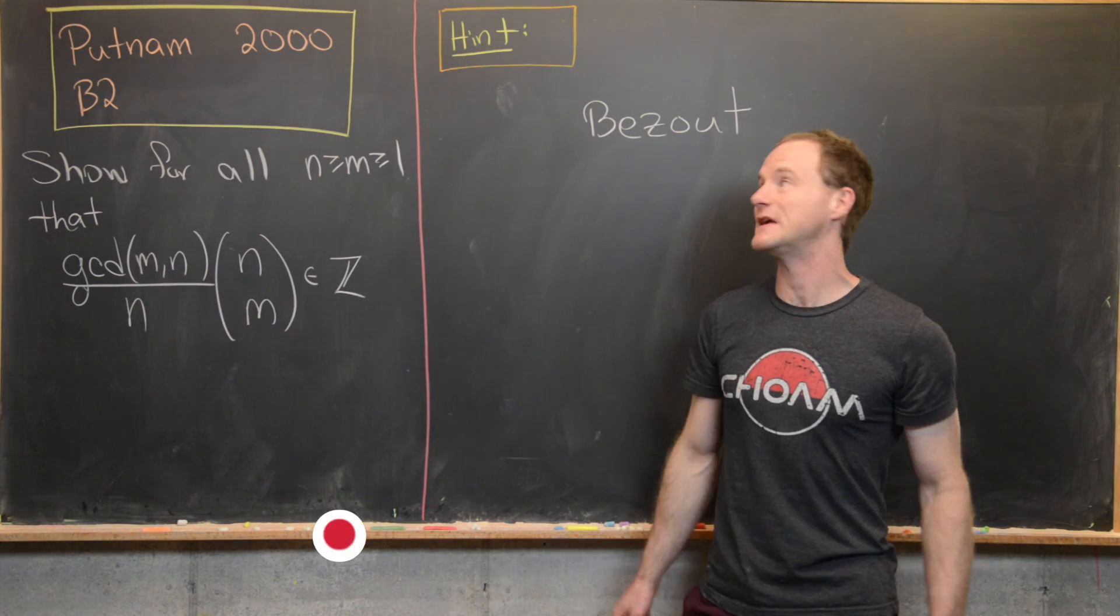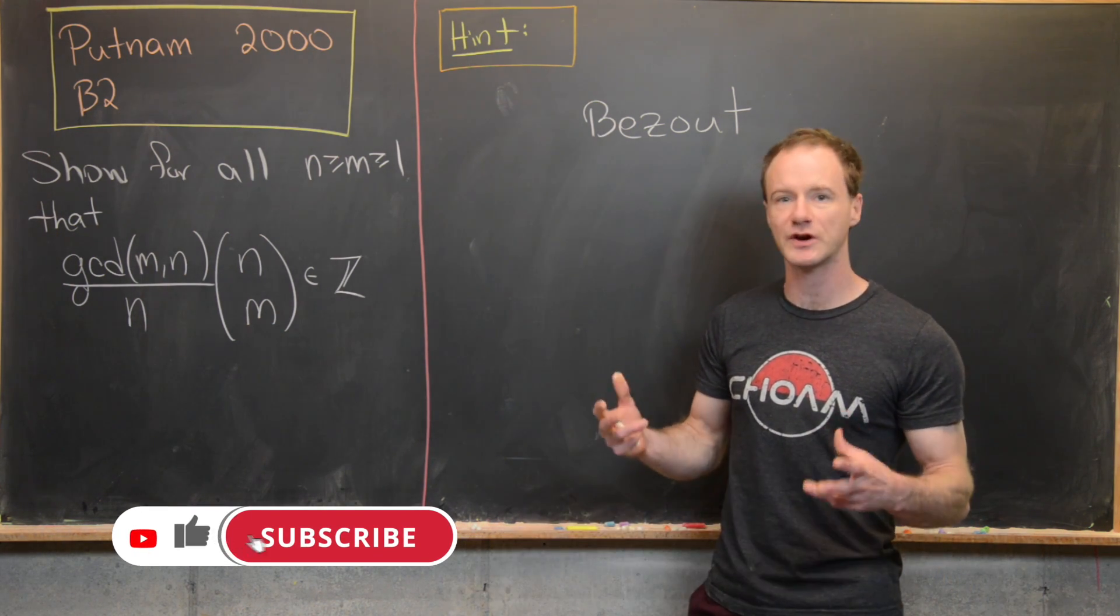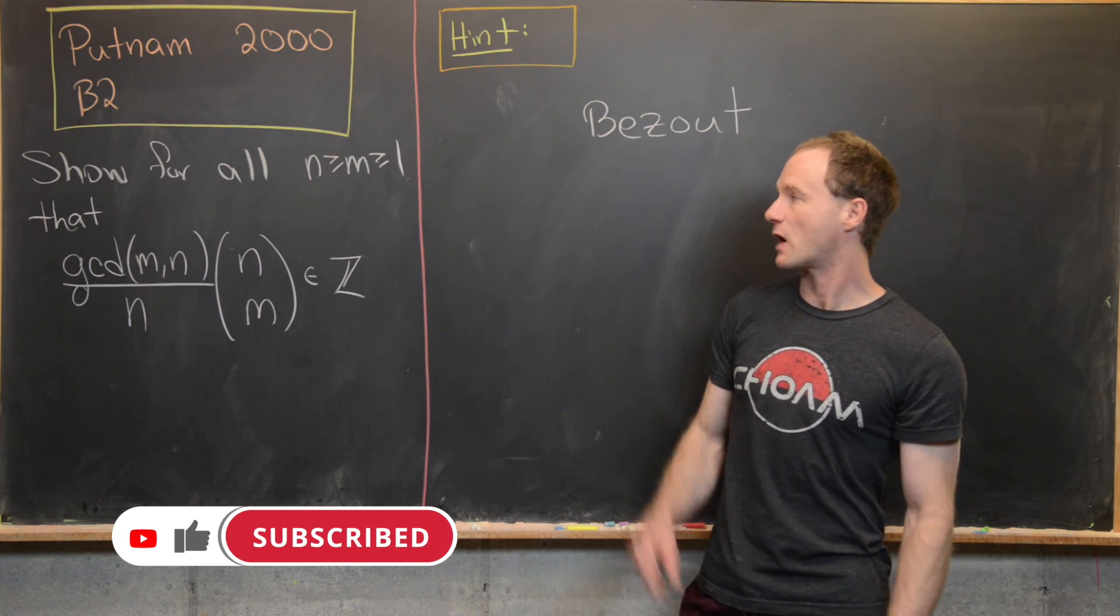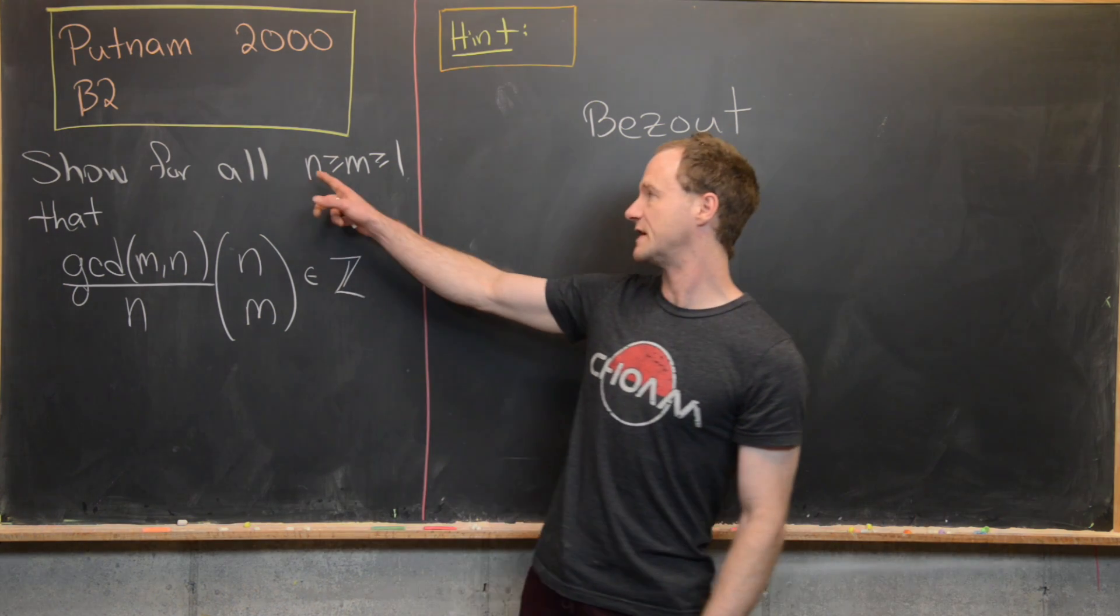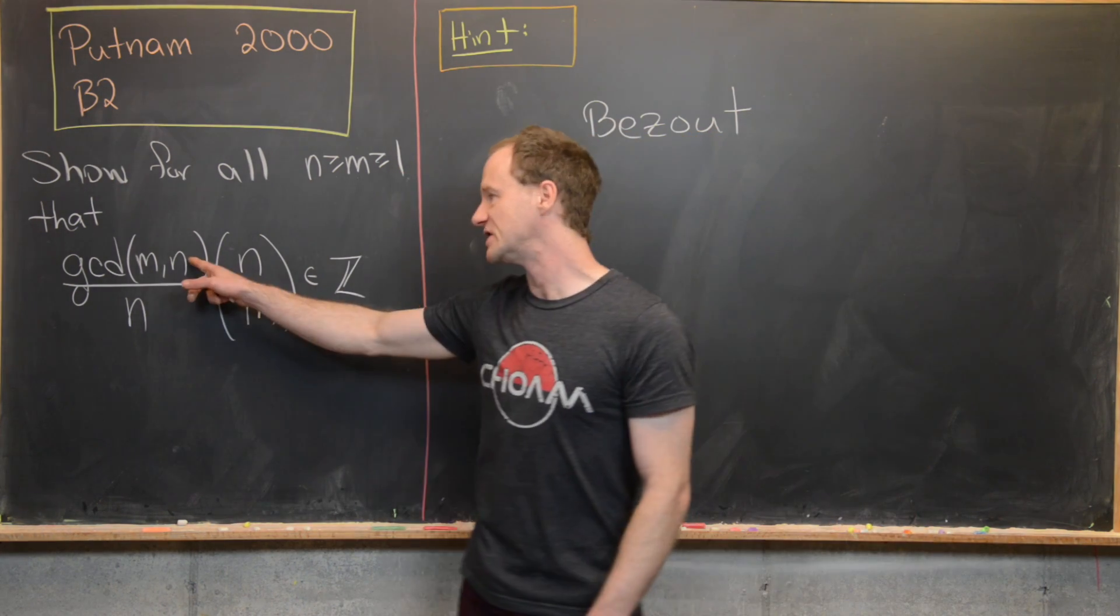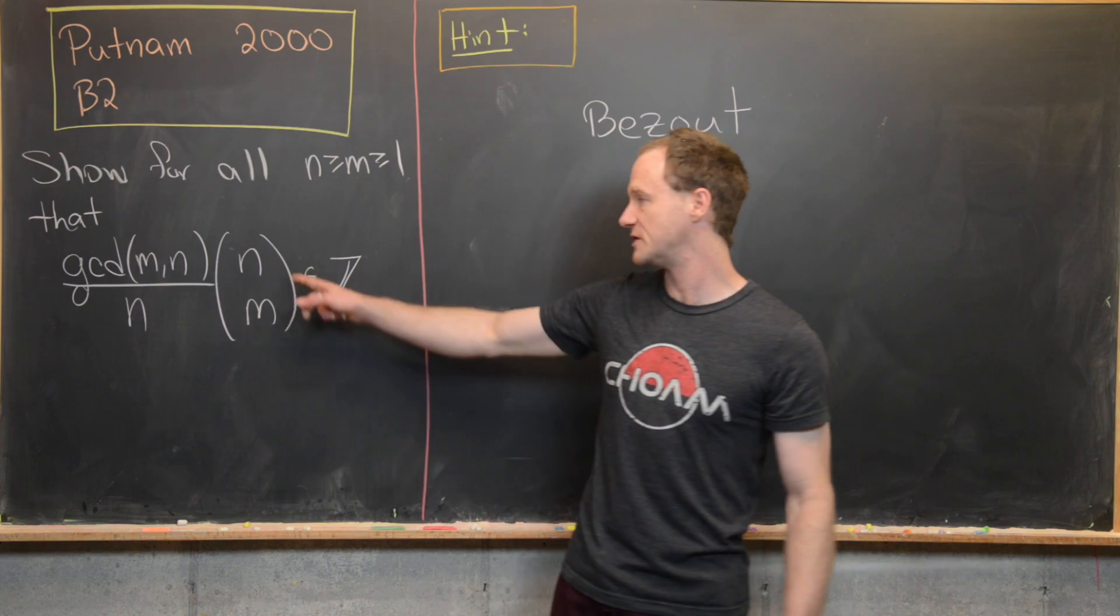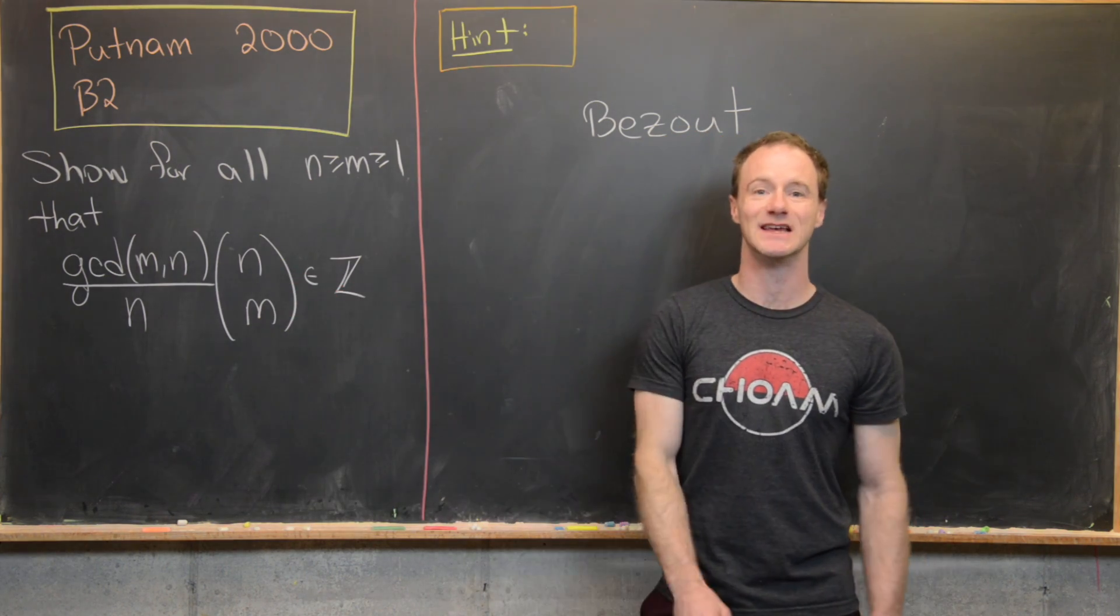Here we're going to look at a solution to problem B2 from the year 2000 Putnam exam. So this has a pretty quick solution. Our goal is to show for all integers n ≥ m ≥ 1 that gcd(m,n)/n × (n choose m) is an integer.